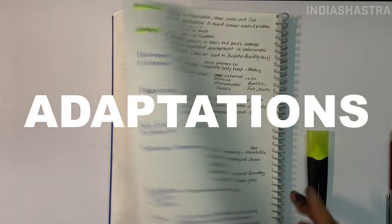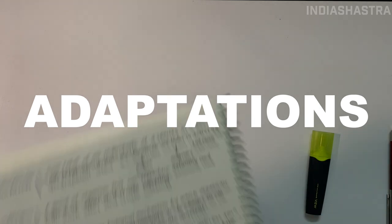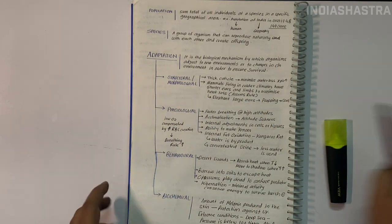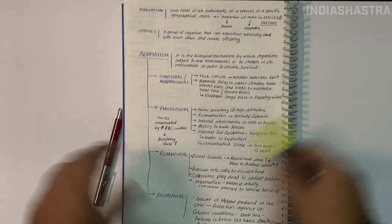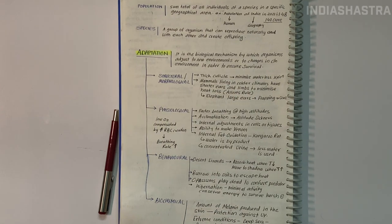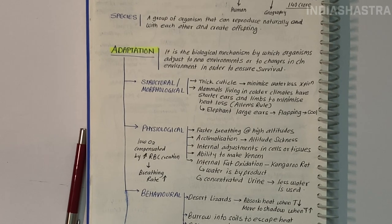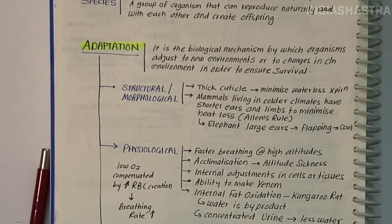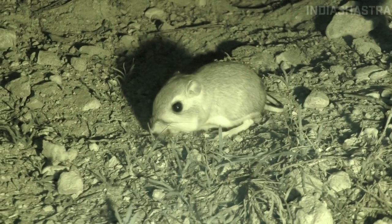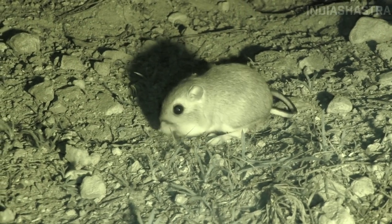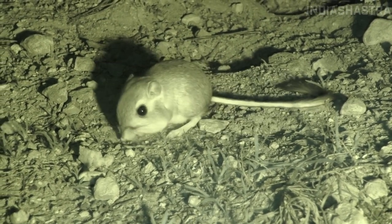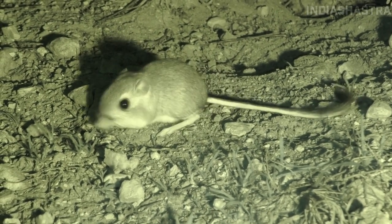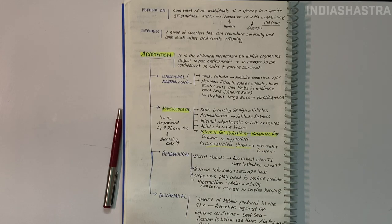Adaptation is the biological mechanism by which organisms adjust to new environments or changes in environment to ensure survival. A mind-blowing example: in the North American desert, the kangaroo rat meets its water requirements through internal fat oxidation — the byproduct is water. It also concentrates its urine so that minimal water is used to remove excretory products. This is how the kangaroo rat saves water.